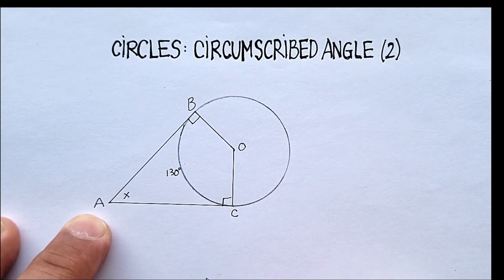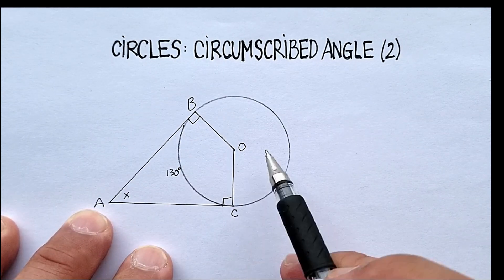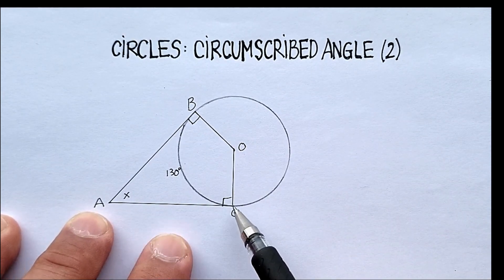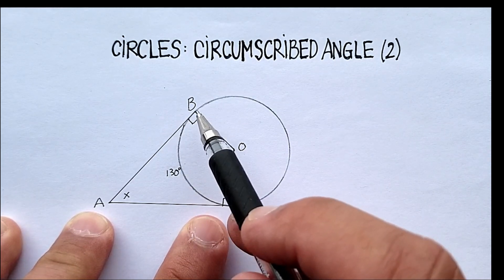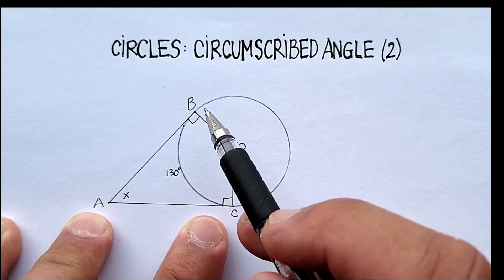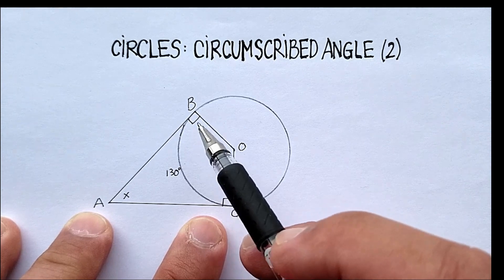In this case it would be point A. Now it forms two tangent lines with the circle itself. And remember that tangent lines form 90 degree angles with the circle. So to the center of the circle, this angle here would be 90 degrees.